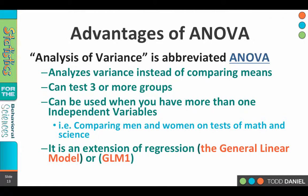An ANOVA can be used when you have more than one independent variable. If you were comparing men and women on a test of math and another test of science, we could do all of those together and control for our type 1 errors. So the ANOVA is an extension of the General Linear Model, or GLM.